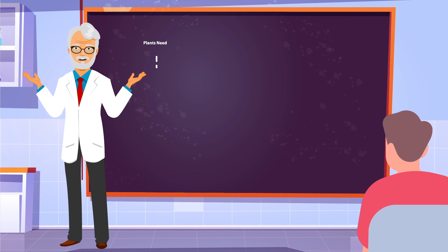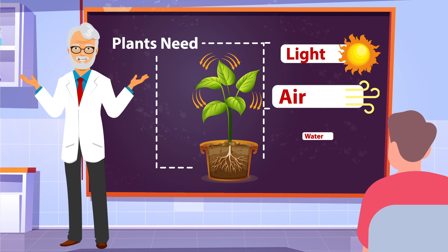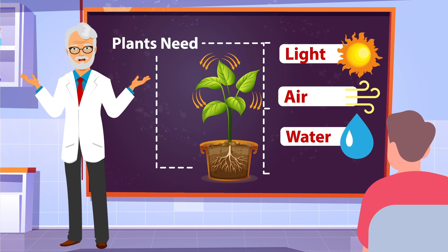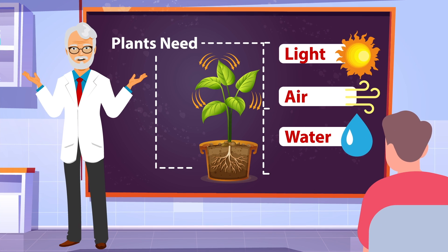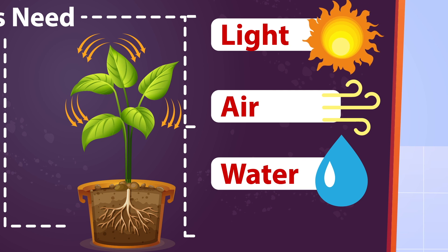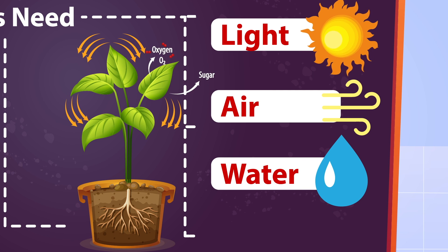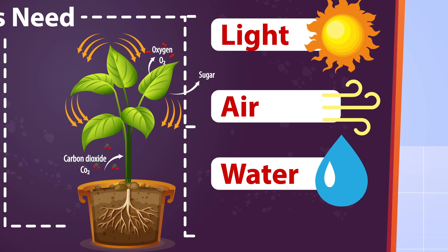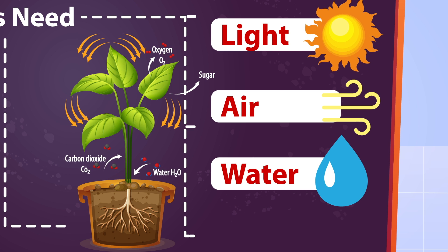Besides love, plants need light, air, and water. Light for photosynthesis, the process of turning light energy into sugars. Air for the uptake of CO2, and water for transport of nutrients.